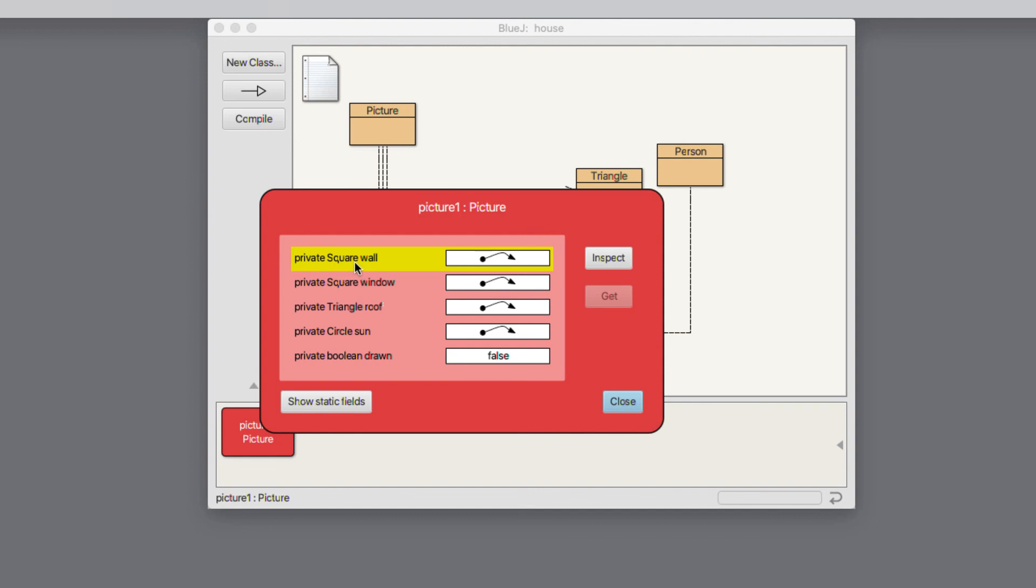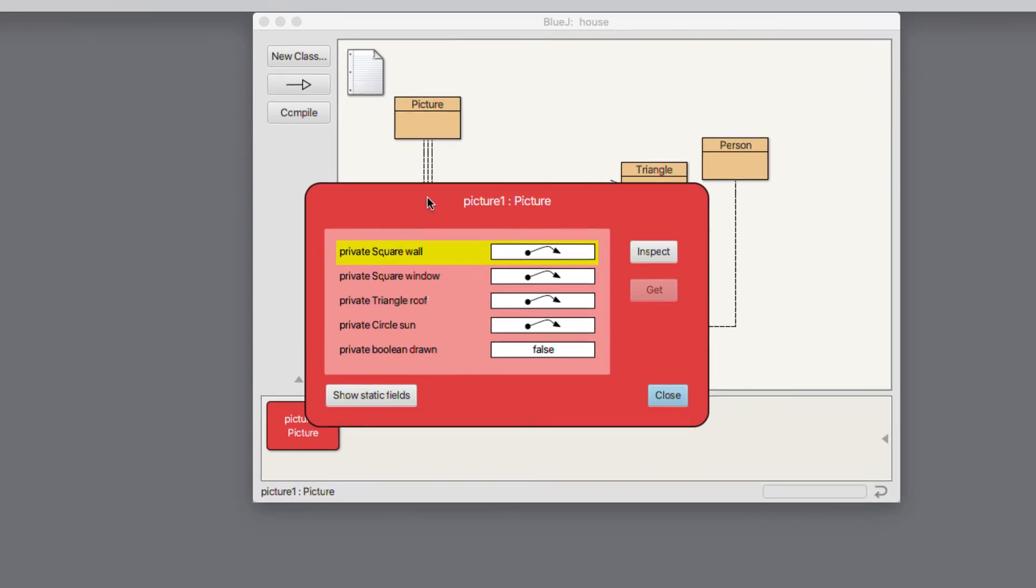So in effect, by defining square, triangle and circle, we've introduced new data types into the Java language. And we can define data items in other objects in terms of our own classes. That's a very powerful feature of the language. So let's look at the source code of picture and see how that works in practice.